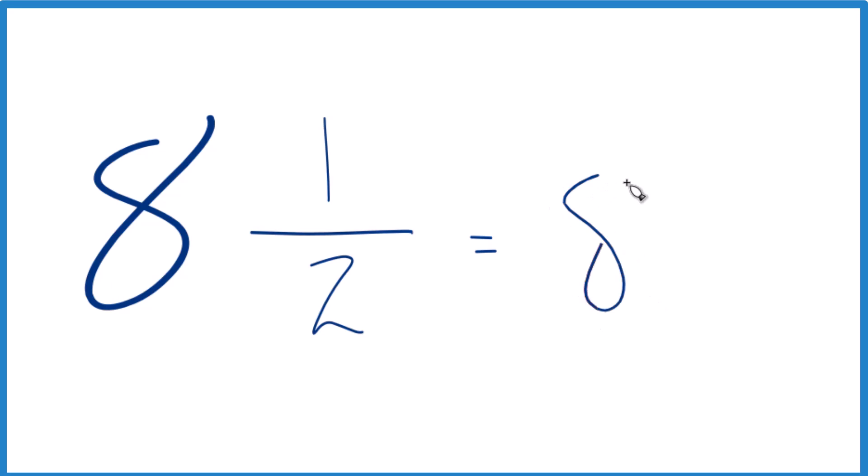So you could just write 8 and then convert 1 half to a decimal. You might already know that 1 half is just .5. In that case, you're done. The fraction 8 and 1 half equals the decimal 8.5.